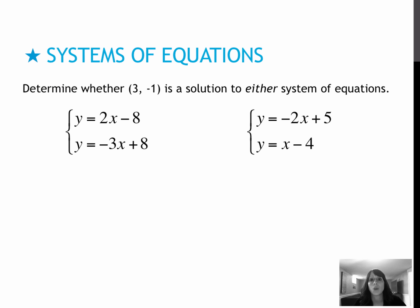Here are two for you to try, so try them on your own, then press play to see how you did. For my first one, I'm going to replace y with -1 and x with 3. And that gives me -1 equals 6 minus 8. Negative 1 does not equal -2. And so I don't even have to check my second one because it's not a point on my first line. Therefore, it doesn't matter if it's a point on my second line. So my first example is no.